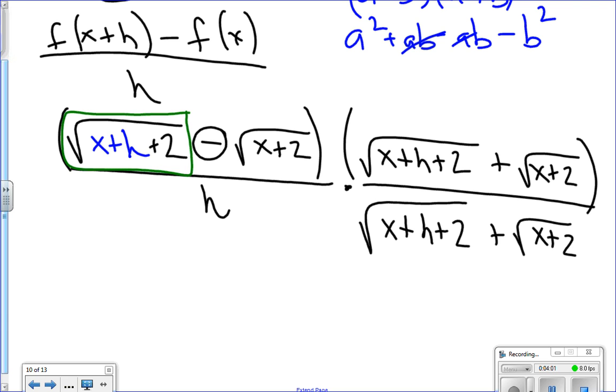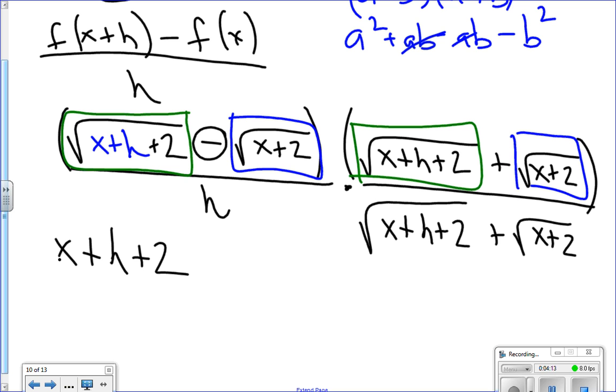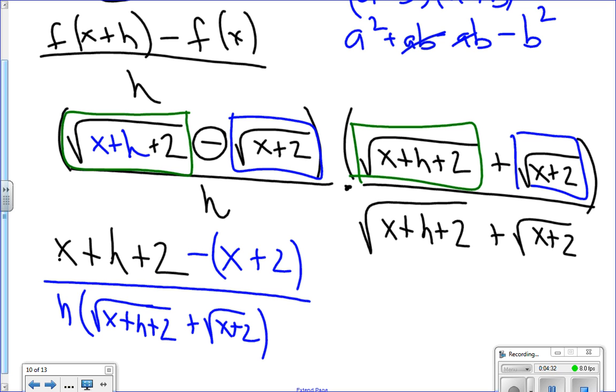So let's do that here. Notice the first product is going to be this square root times itself. A square root times itself just reveals the inside expression. Then the last product is this square root times itself, so that's going to reveal minus x, and we're subtracting minus x plus 2. This is all divided by h times the square root of x plus h plus 2 plus radical x plus 2.